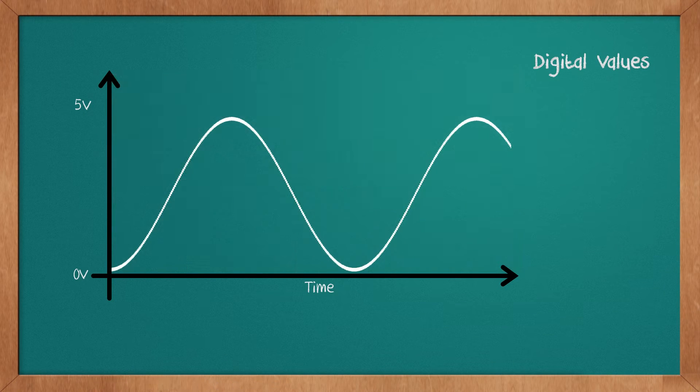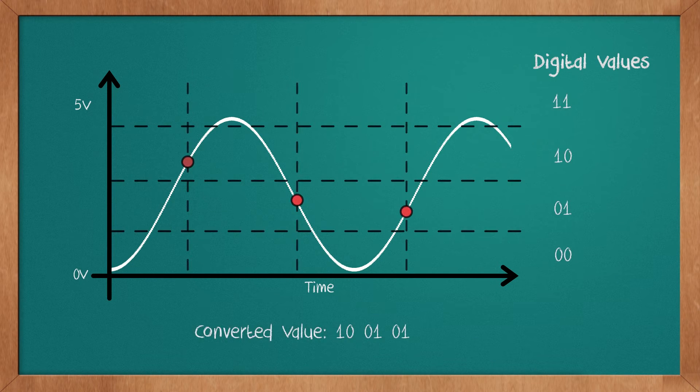Let's look at the same example, but with 4 regions or 2-bit accuracy. In this example, we can convert a range of infinite analog values from 0 to 5 volts to a range of finite digital values from 0 to 3.